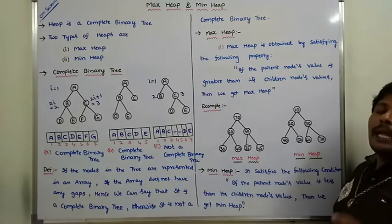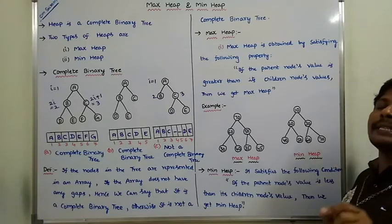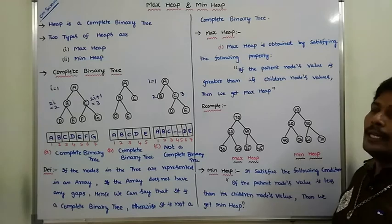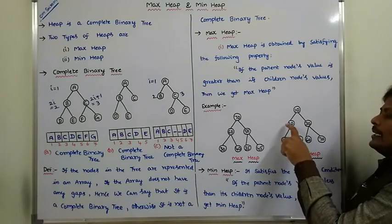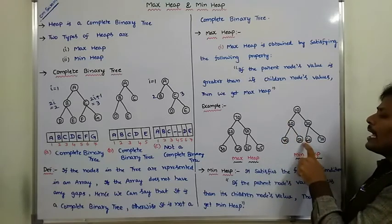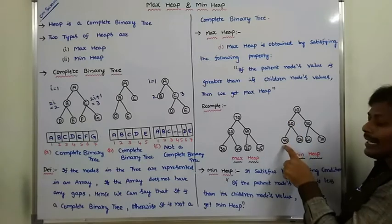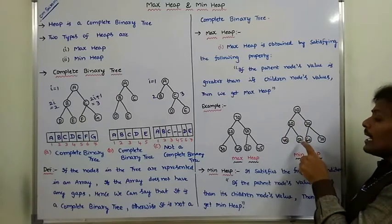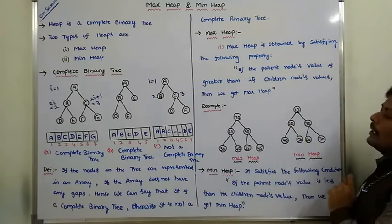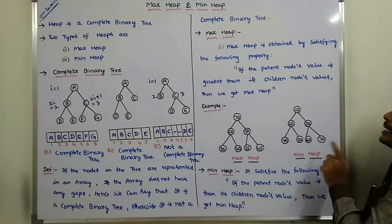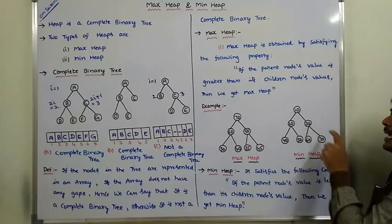Go for minimum heap. In the minimum heap, if the parent node's value is smaller than its children's value. For example, take node 20. It is the parent of 40 and 50. The parent node's value is 20. 20 is less than 40 and 20 is less than 50, so it satisfies the minimum heap property. Consider node 30. Its children are 60 and 70. 30 is less than 60, and 30 is less than 70 — it satisfies the minimum heap property.